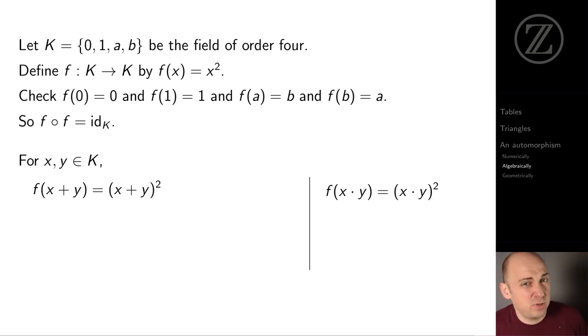So let's compute F of x plus y and F of x times y. We'll work on F of x plus y first. So expanding x plus y squared, we get x squared, x times y, y times x, and y squared. But by commutativity, y times x equals x times y. And in K, anything plus itself is zero. So x times y plus y times x vanishes. Thus, F of x plus y equals F of x plus F of y.